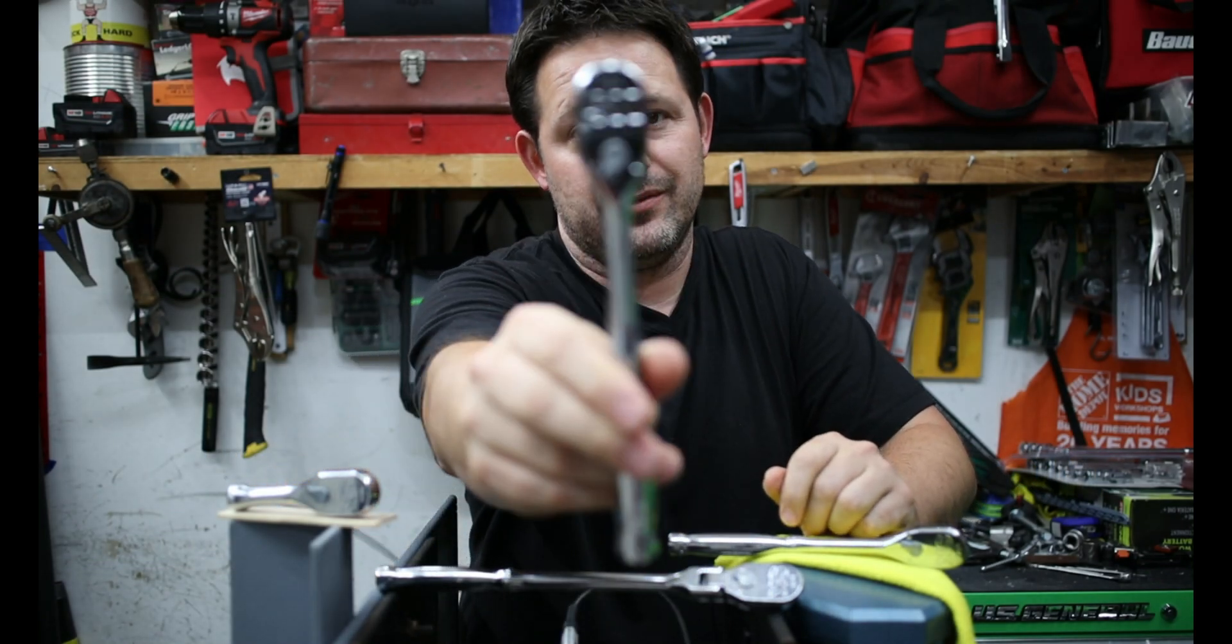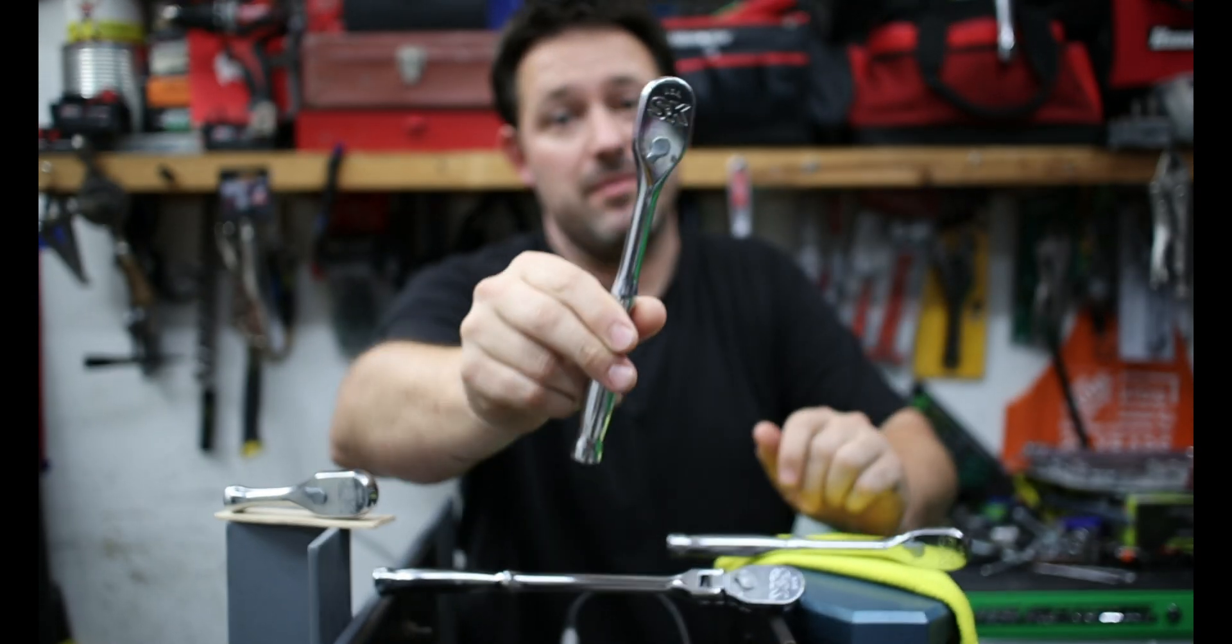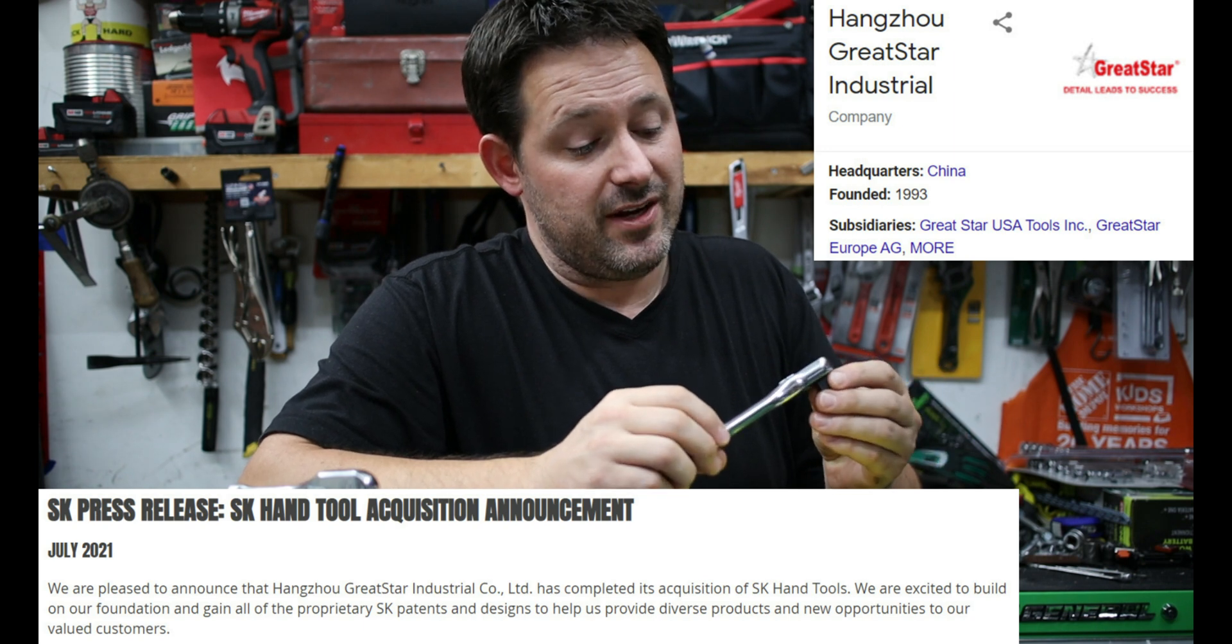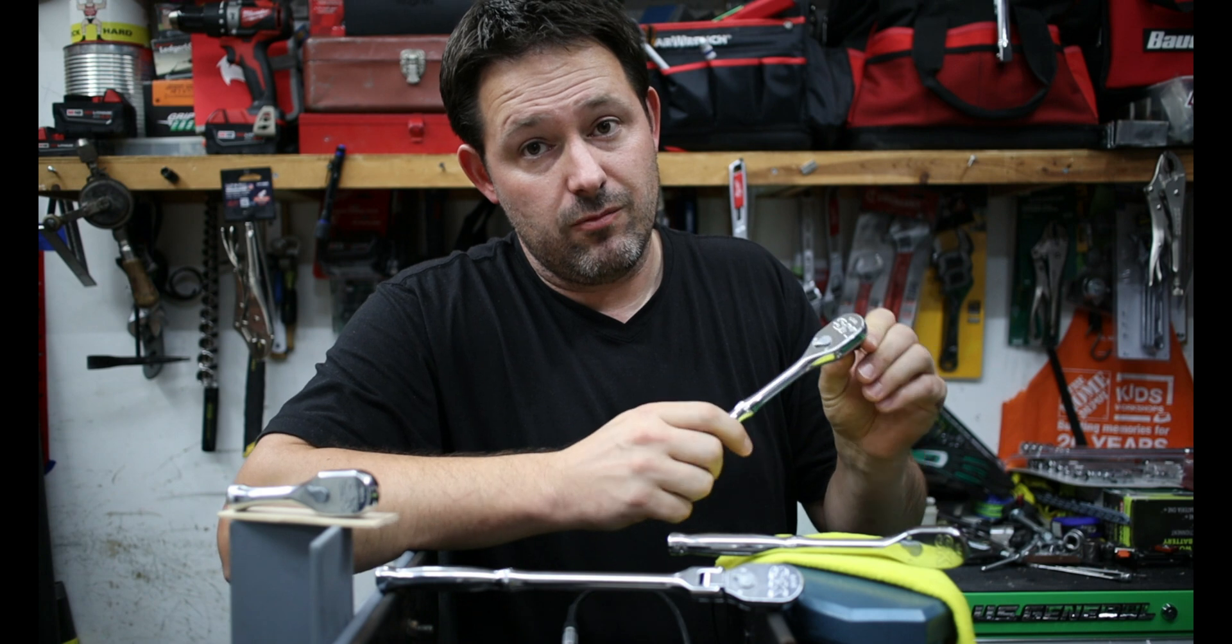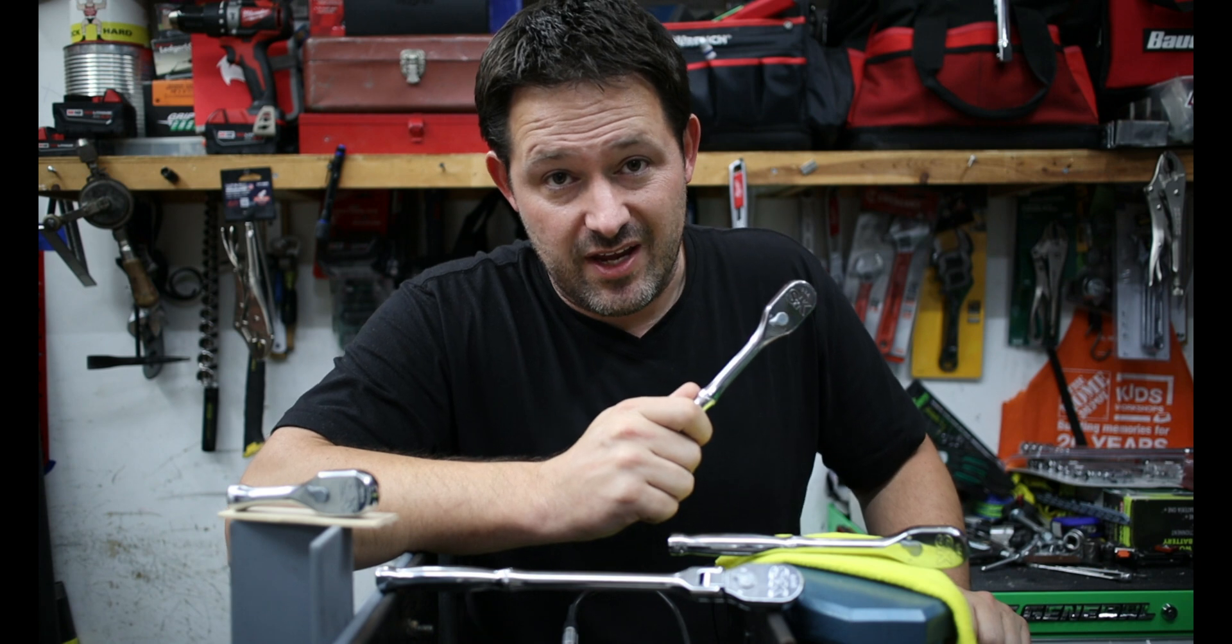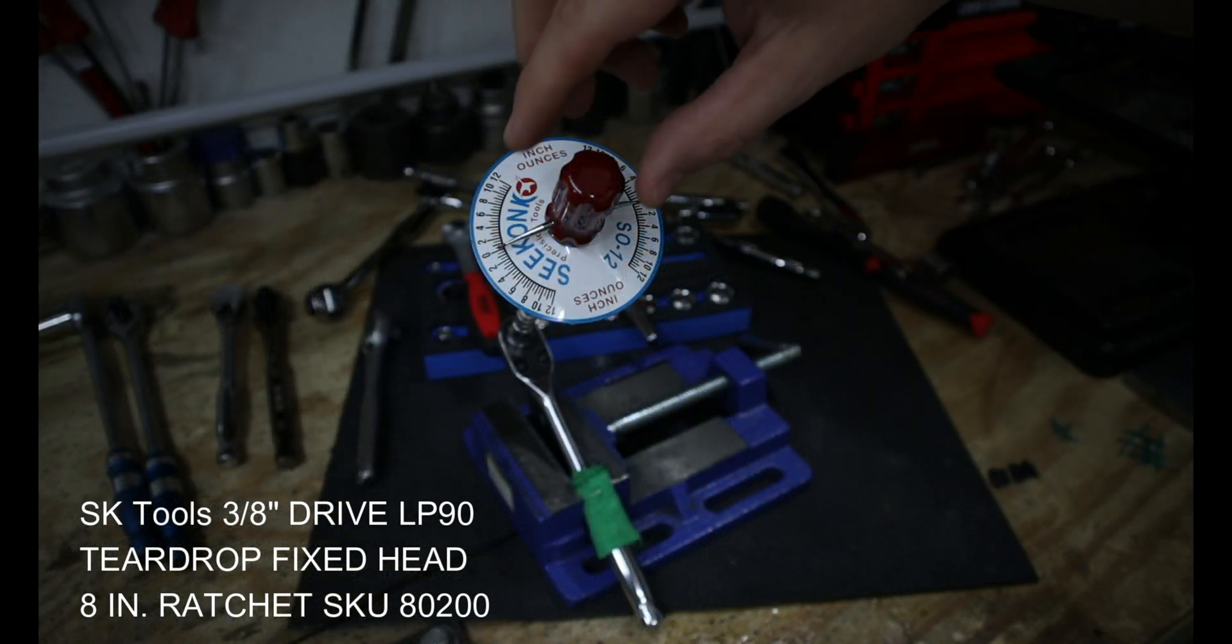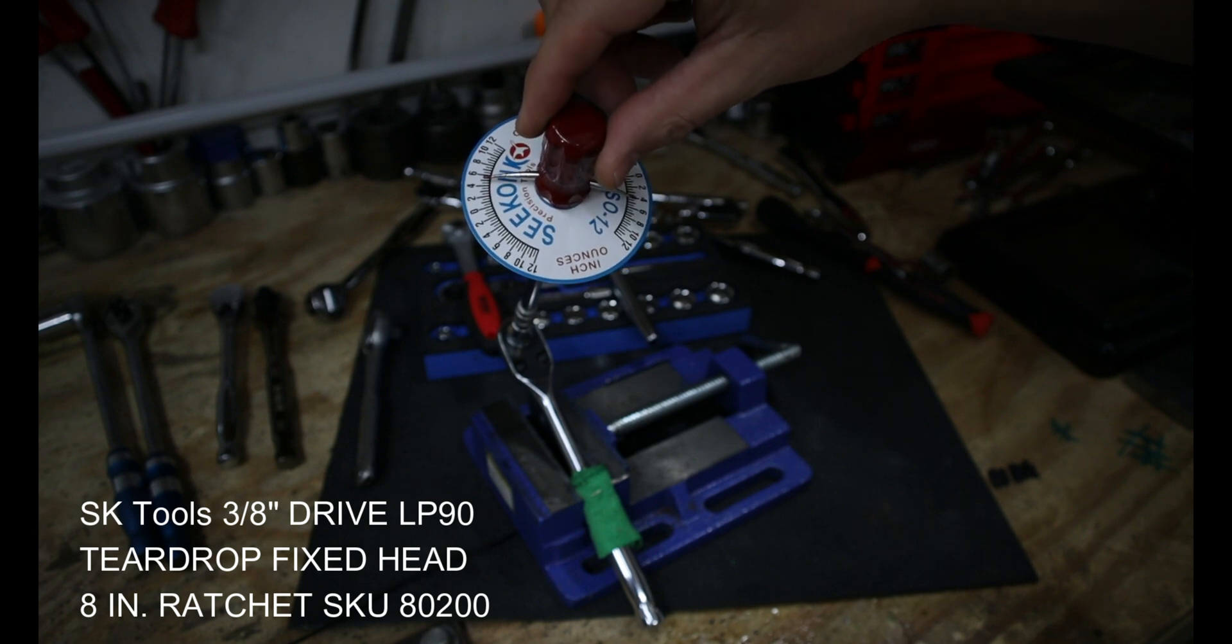Today we're going to be testing out the SK tools 3/8 inch drive USA made ratchet. Now SK tools was recently bought out by Great Star Tools and they're headquartered in China. Before we see if we can get this airmail worthy, we need to send this through four different tests.